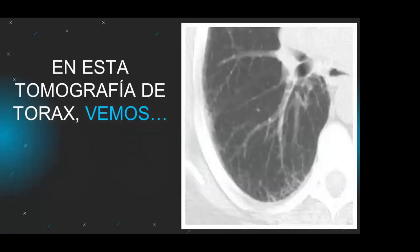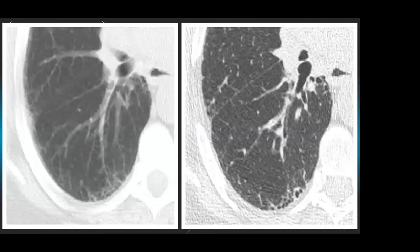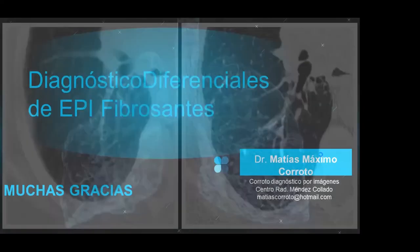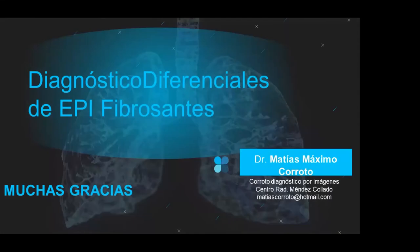Si tenemos una tomografía de corte grueso, difícilmente podamos identificar panelización ni determinar que el paciente tiene una neumonía intersticial usual que requiere inicio inmediato de antifibróticos. Debemos exigir las tomografías de tórax de alta resolución para poder estudiar el intersticio pulmonar.